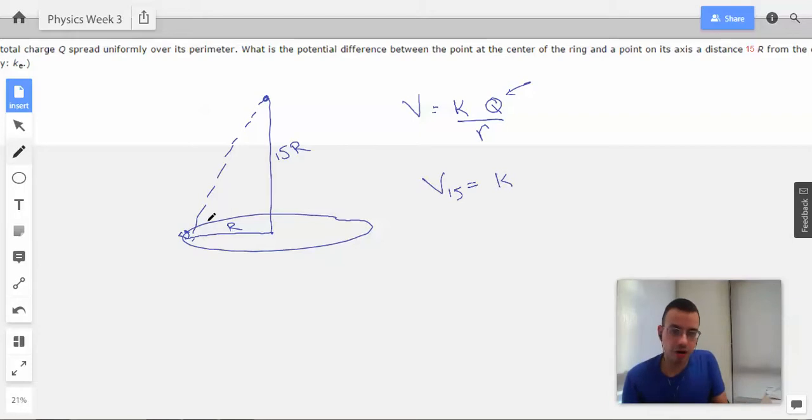And we added up all of these, they'll add up to a charge of Q, and they'll all be the same R distance away. So they'll all have the same contribution to voltage. Okay, so now we just need to find out what this R is going to be.